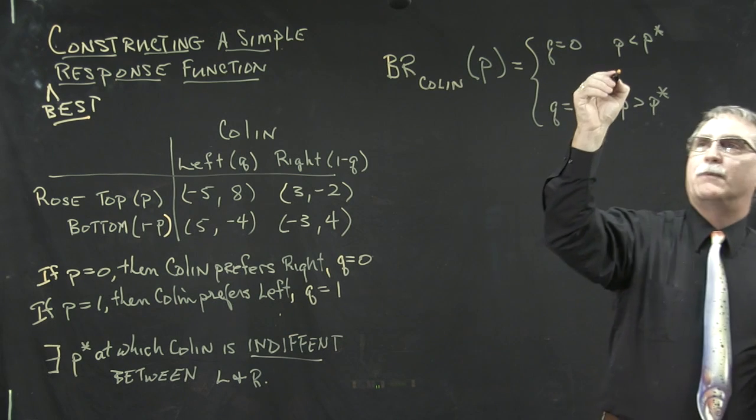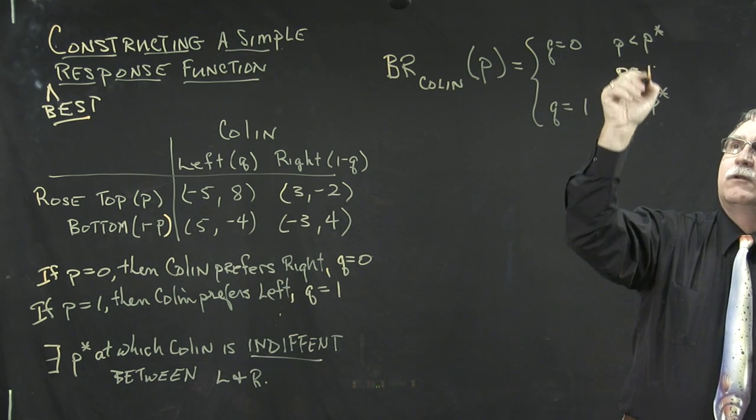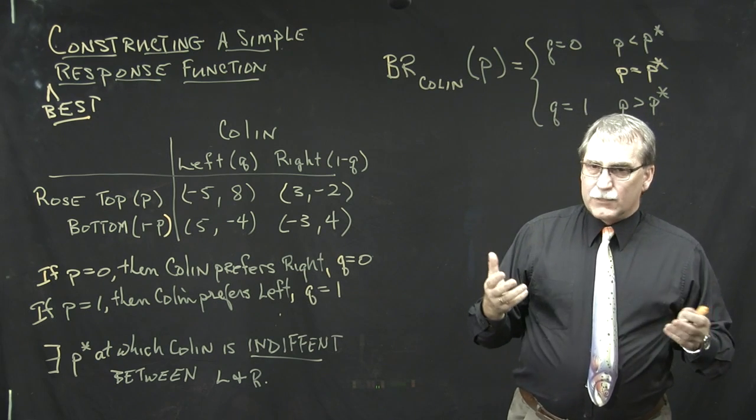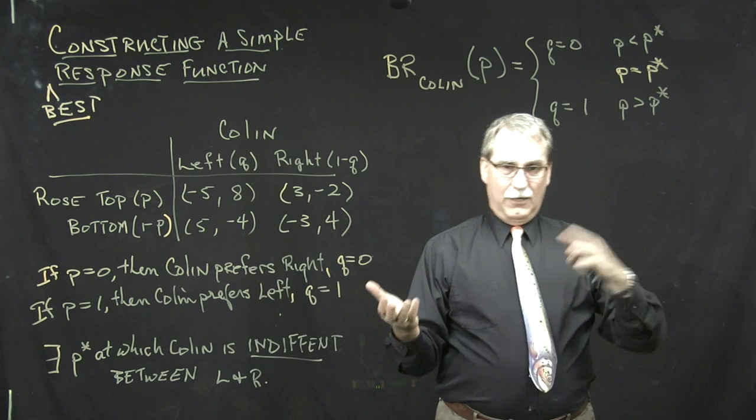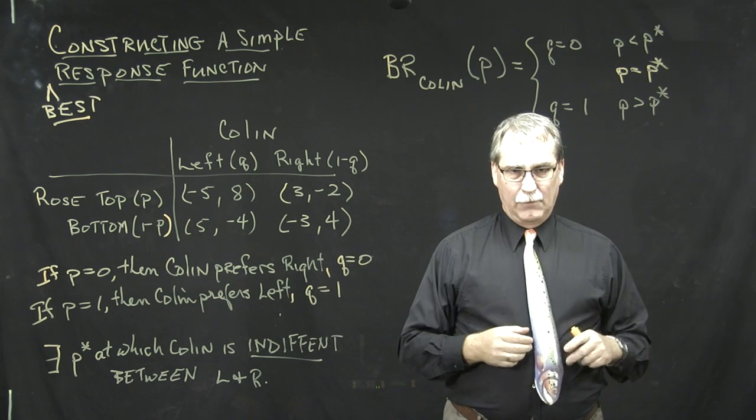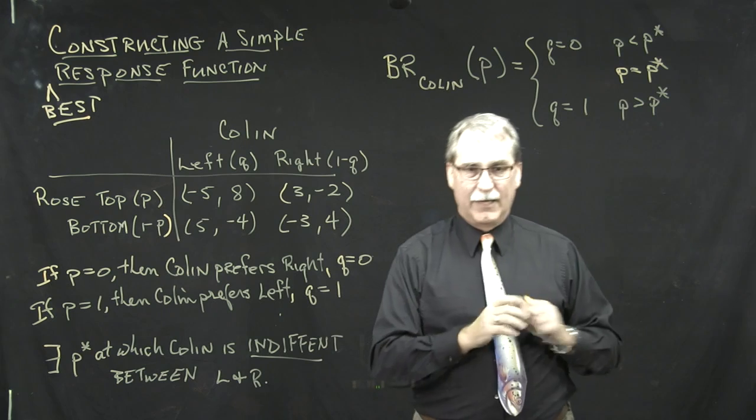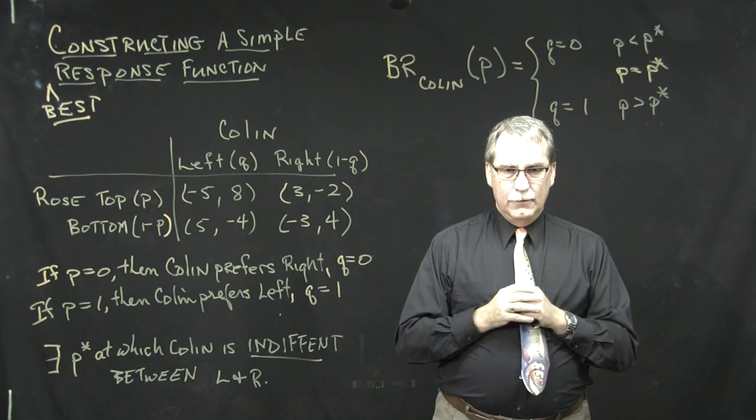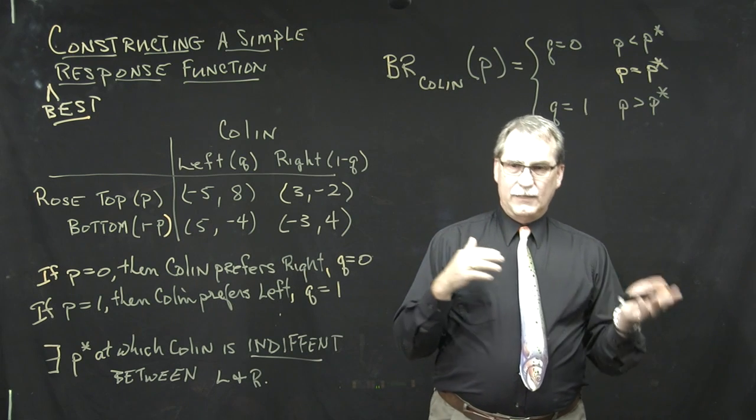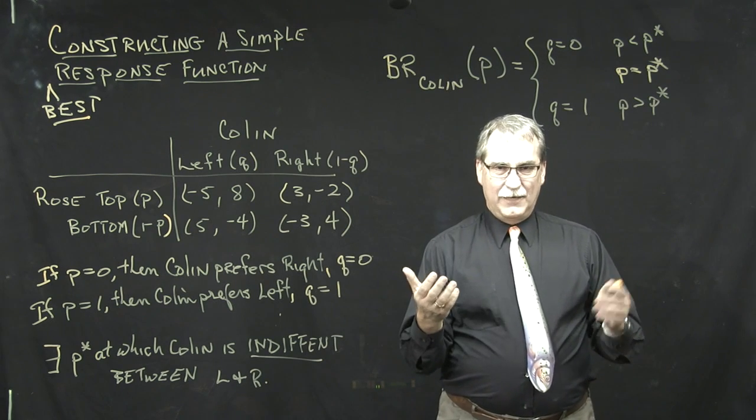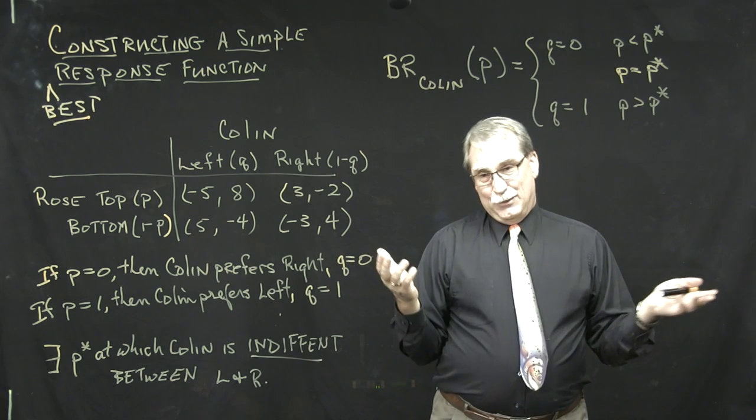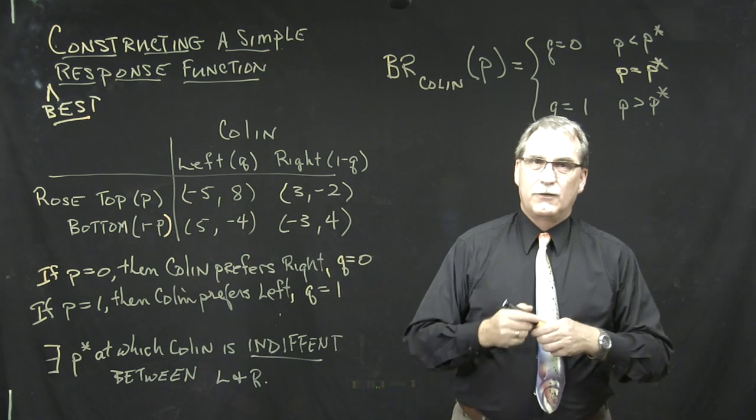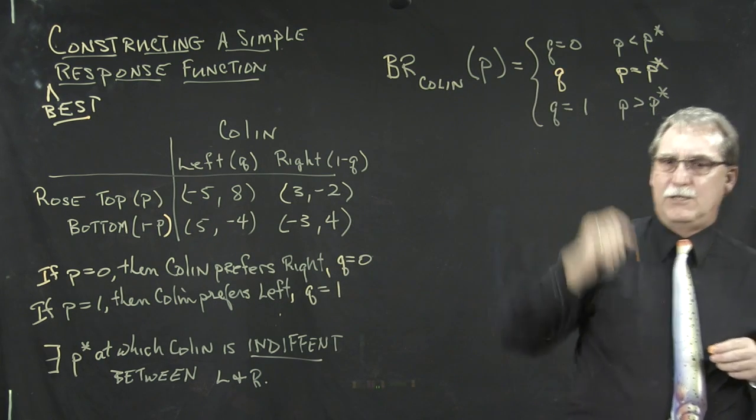So the question becomes, what happens when P equals P star? Well, at P star, Colin doesn't care whether he's in the left-hand column or the right-hand column. But if he doesn't care which column he's in, it doesn't matter what probability he assigns to choosing the left-hand column or the right-hand column. Because it doesn't matter. So the value of Q can be anything you want it to be. So the value at this point is Q itself.